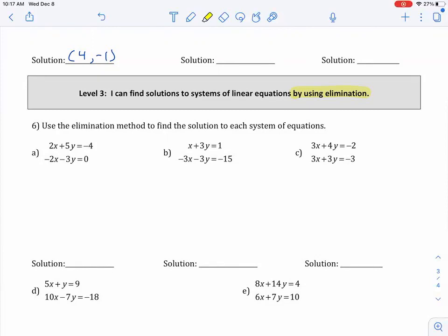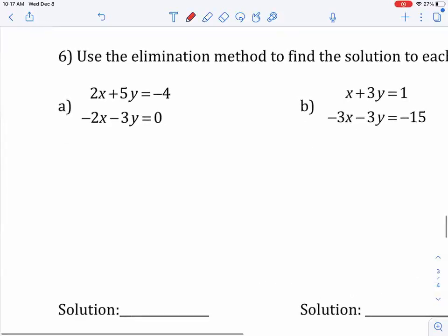And that's because we want to eliminate one of the variables. So, for problem number 6A, if I look at this problem, I notice that 2X and negative 2X are opposites of each other. So, what I can do is just add these two equations down. And if you add them down, notice that 2X minus 2X would be 0X. They cancel each other out.